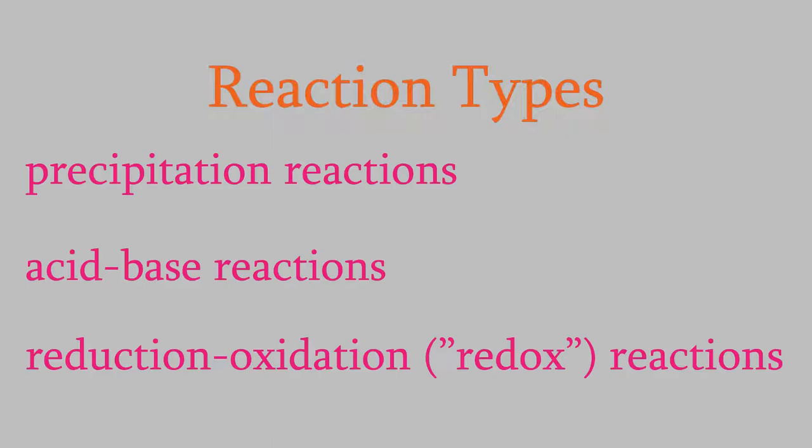This is the third in a series of three videos talking about the three kinds of chemical reaction. In the previous two videos, we talked about precipitation reactions and then acid-base reactions. Today we'll talk about the third type of reaction, reduction-oxidation, or redox reactions.